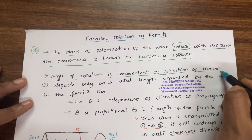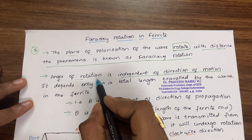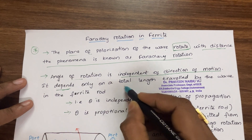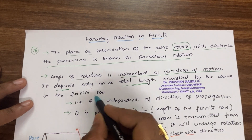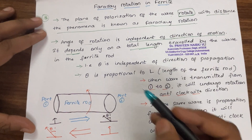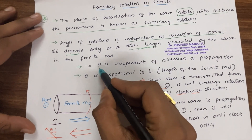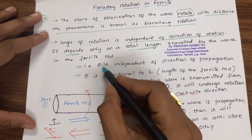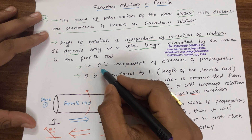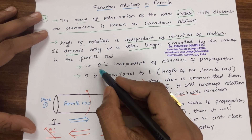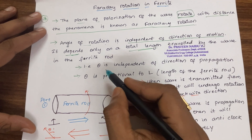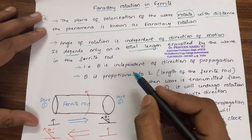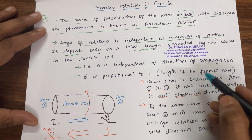The rotation angle is independent of the direction of motion but depends only on the total length traveled by the wave in the ferrite rod. So if theta is the rotation angle for a given input plane wave with a certain polarization, theta depends only on the length of the ferrite rod, not on the direction of motion.